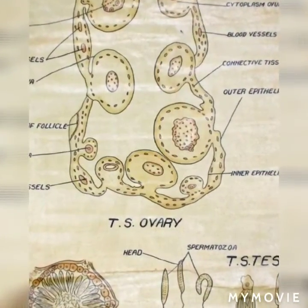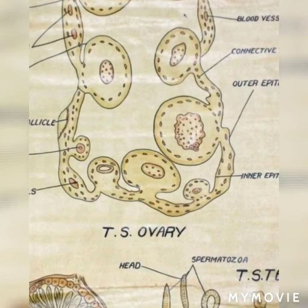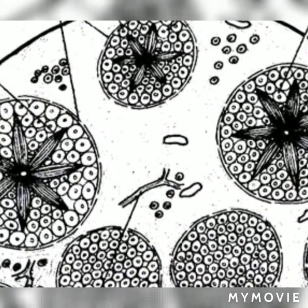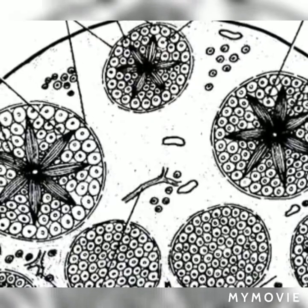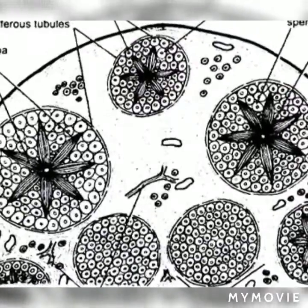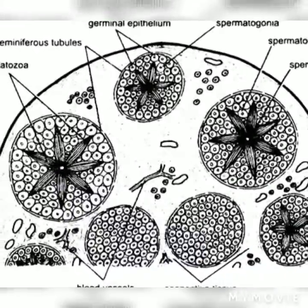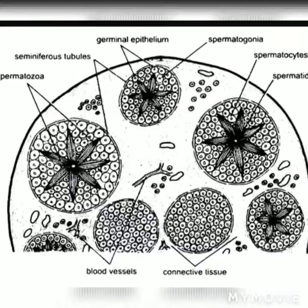The ovum is also surrounded by follicular cells which developed from oogonia. Small patches of germinal epithelium are lying attached to the theca externa at various places. The theca externa, theca interna, and follicular cells form the ovary stroma which secretes ovarian hormones.